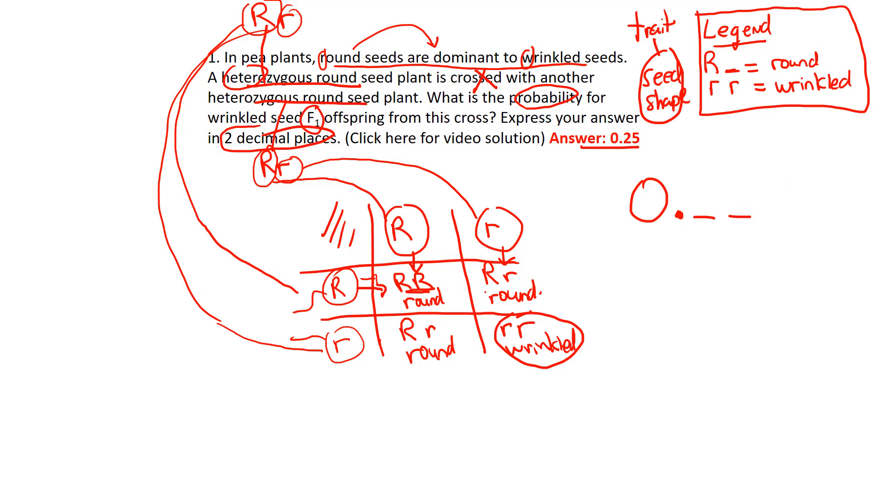So how you do probability in a decimal place is count the number of total boxes. We have four total boxes. How many out of those four boxes do we have wrinkled? One out of four, so that's the fraction. If we want to do a decimal, that fraction, this sign right here is just like divide. One divided by four, zero point two five.